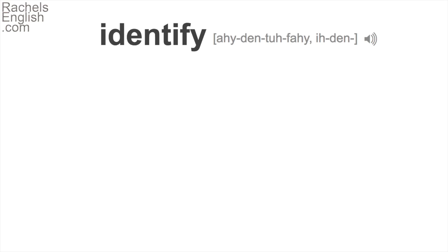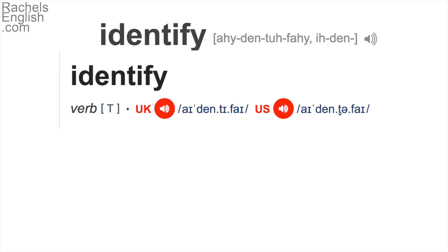First of all, when you use an online dictionary, you'll see that they try to help you with the pronunciation. Let's look up the word 'identify.' Dictionary.com tells me this is how I should pronounce it. Cambridge Dictionary has completely different symbols, and they have two pronunciations — one for British English and one for American English. That's good to know. It didn't say one way or another in Dictionary.com.